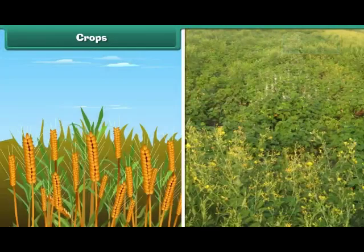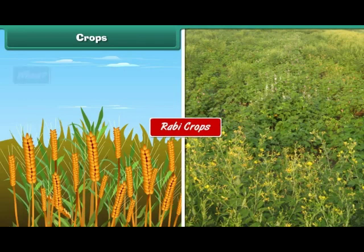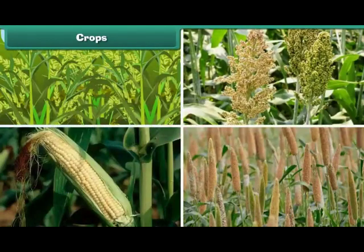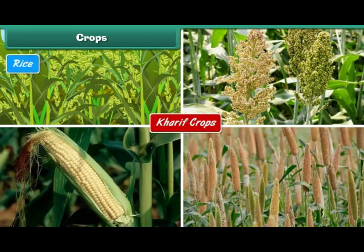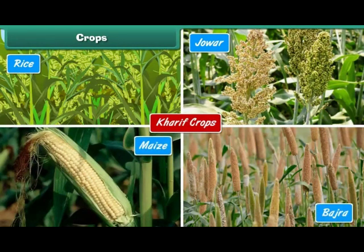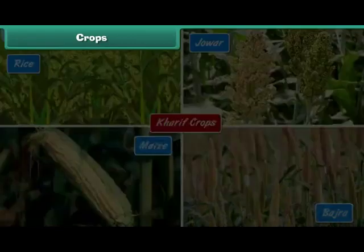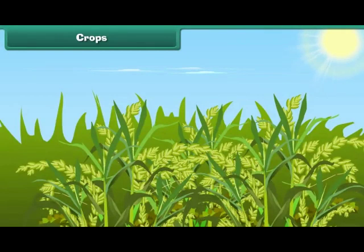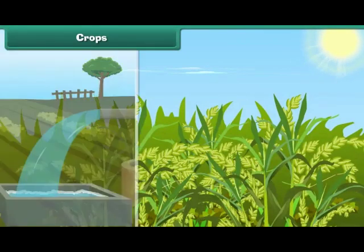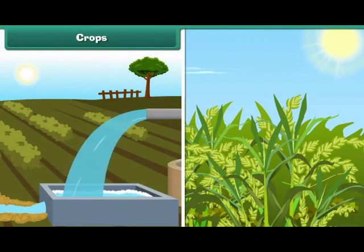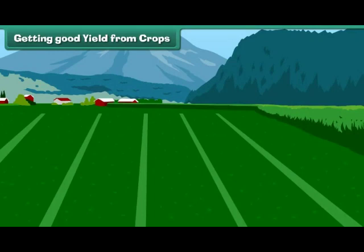The crops which are grown in the winter season are called rabi crops; examples include wheat and gram. The crops which are grown in summer are called kharif crops; examples include rice, jowar, maize, and bajra. Different types of crops require different amounts of sunlight, water, air, and type of soil.